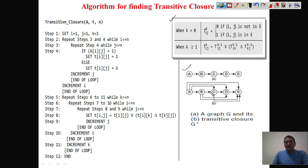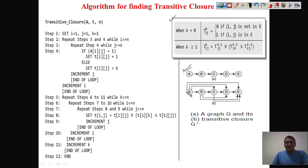So we can say: path a to b is possible, a to c is possible, a to d is possible, and a to e is possible. Similarly for b, you can go to c, d, and e. For c, you can go to d and e. From d, you can go to e. This is how we represent the graph as a transitive closure — showing all possible paths between two vertices.